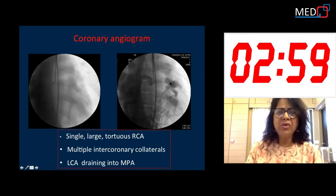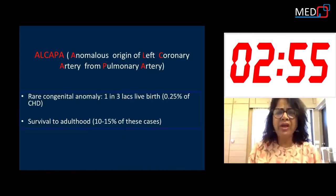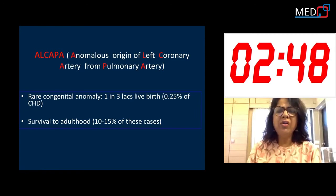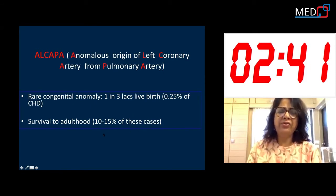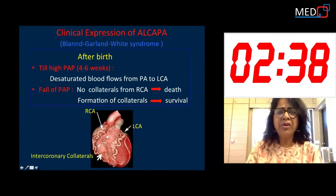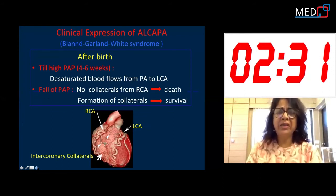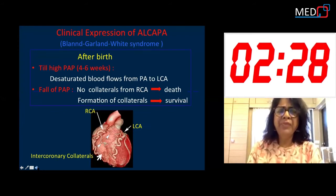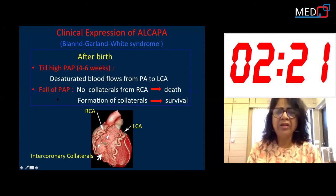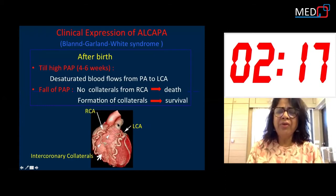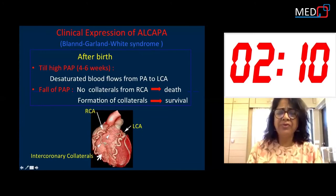The collaterals were connected to the left coronary artery which was draining into the pulmonary artery, confirming a diagnosis of ALCAPA — anomalous origin of left coronary artery from the pulmonary artery. This is a very rare congenital anomaly occurring in only 1 in 300,000 live births, and only 10 to 15% of these cases reach adulthood. The clinical expression of ALCAPA begins after birth with morphological and functional changes in the pulmonary circulation. After birth till the age of 4 to 6 weeks, pulmonary arterial pressure remains high, so the left coronary artery still receives blood from the pulmonary artery — though it is desaturated.